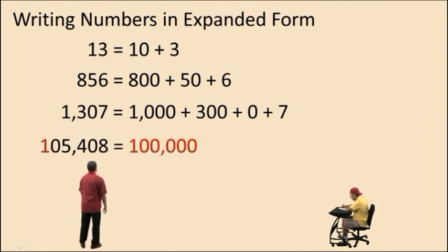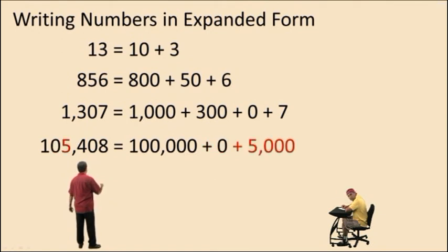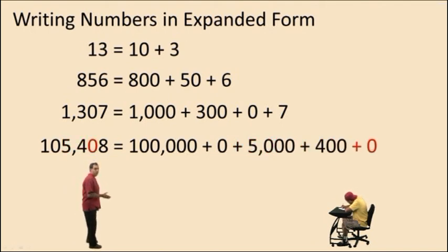One hundred five thousand, four hundred eight. We have one one hundred thousand. Notice we have zero of the ten thousands. So we put a zero as a placeholder there. We have five one thousands. And that completes our thousands period. Then we go to the next one, which is four hundreds. So we write four hundred. We have zero tens. So we'll put a zero to represent that place value. And we have eight ones. And so we write plus eight. So there is the expanded form for one hundred five thousand four hundred eight.